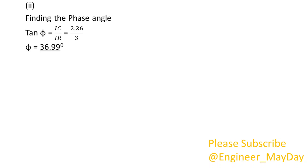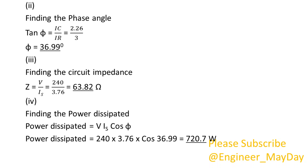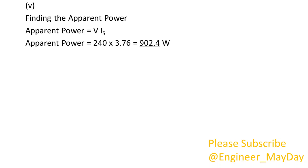2. Finding the phase angle — Phi equals 36.99 degrees. 3. Finding the circuit impedance — Z equals 63.82 ohms. 4. Finding the power dissipated — power dissipated equals 720.7 watts. 5. Finding the apparent power — apparent power equals 902.4 watts.